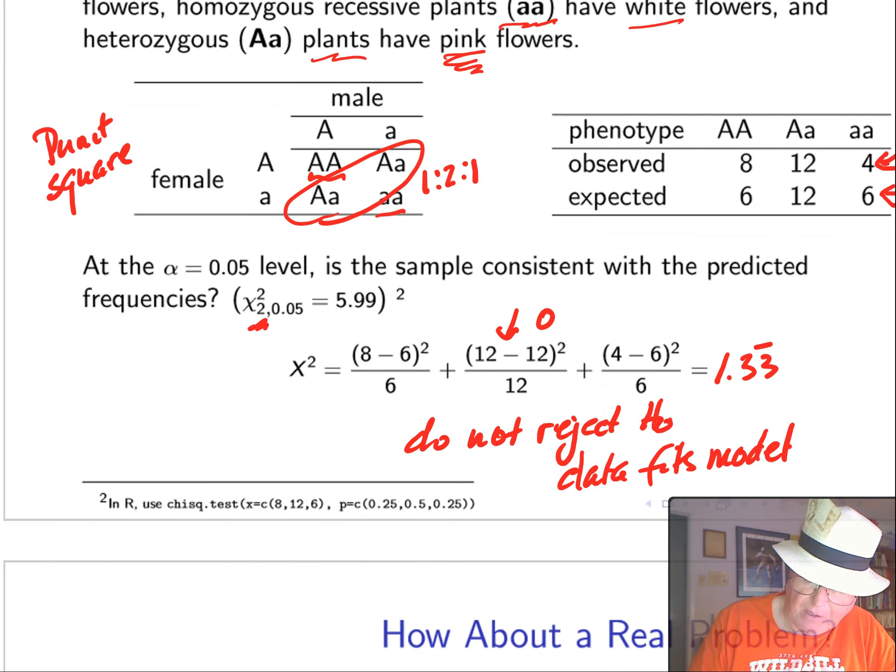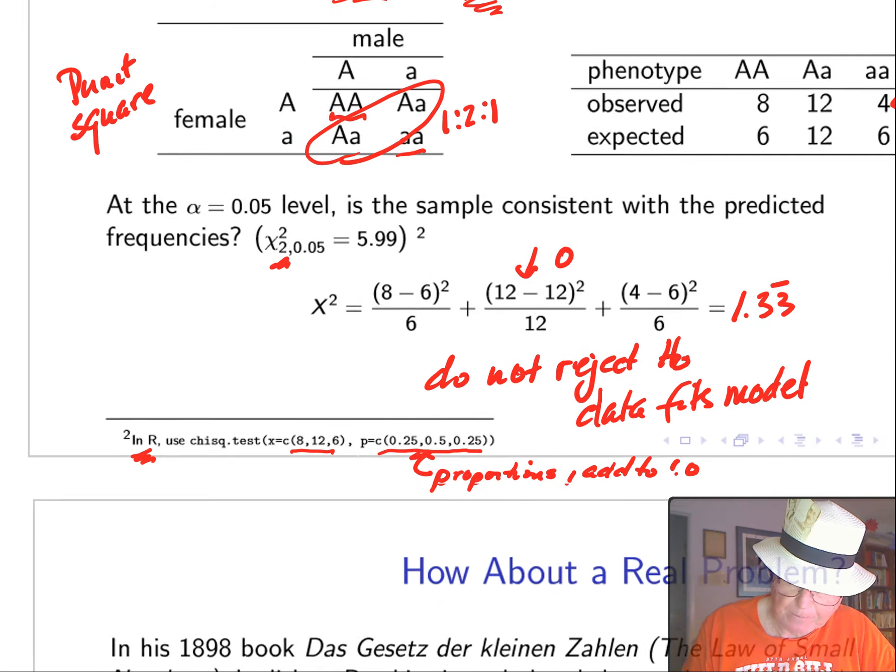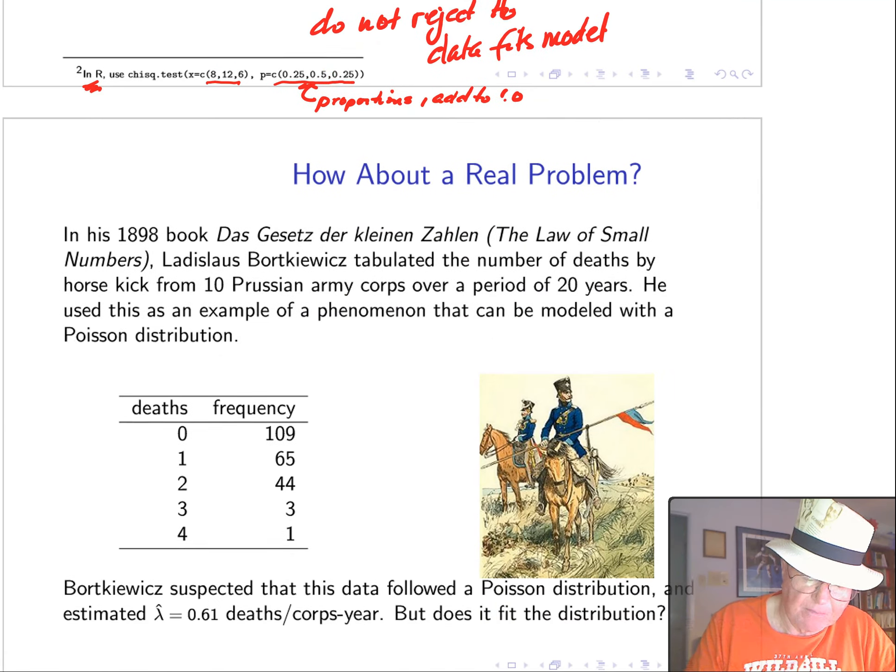Again, if we don't like to do hand calculation, we can do this in R. This time, we give it the frequencies, and we give it the expected proportions. And these must add to 1. That's not bad.